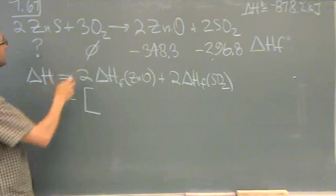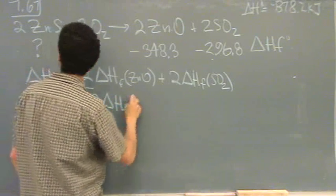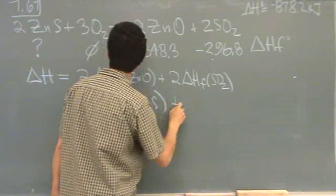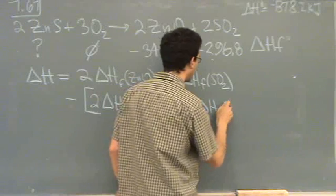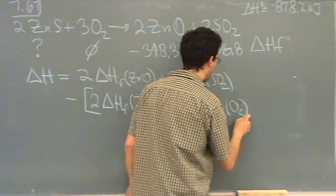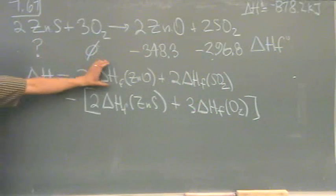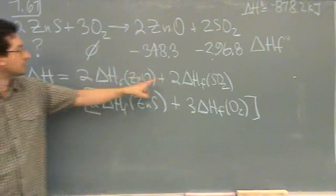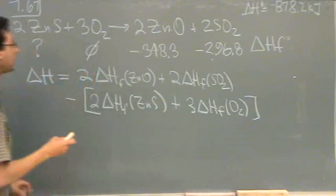There's the reactants minus the products. So I'll open the brackets for the products. Minus the sum of the reactants. Notice how I put the coefficients in here. So let's just see what we got.